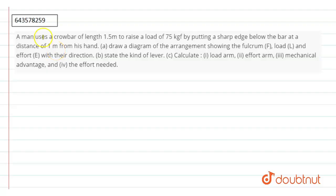Hello, so our question is a man uses a crowbar of length 1.5 meter to raise a load of 75 kgf by putting a sharp edge below the bar at a distance of 1 meter from his end. Draw a diagram of the arrangement showing the fulcrum, load and effort with their directions.